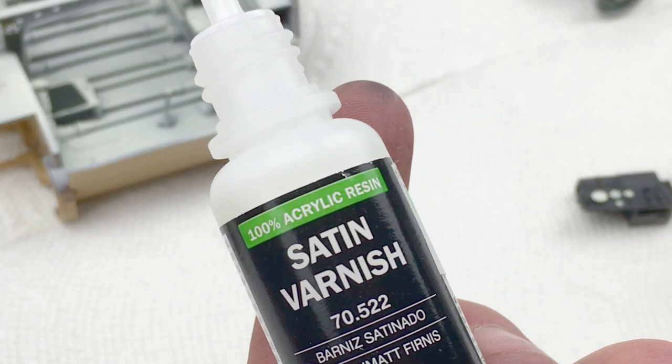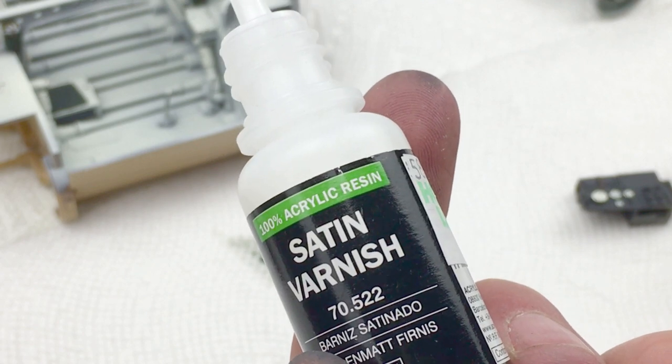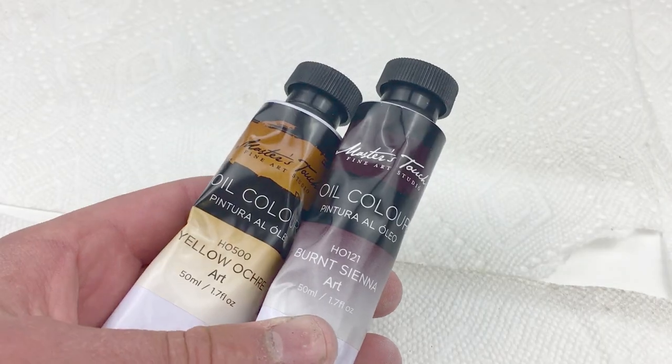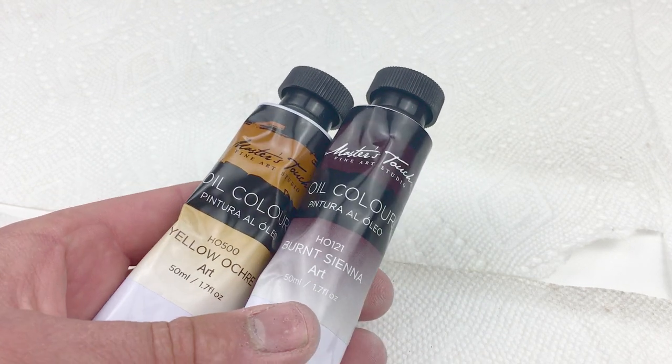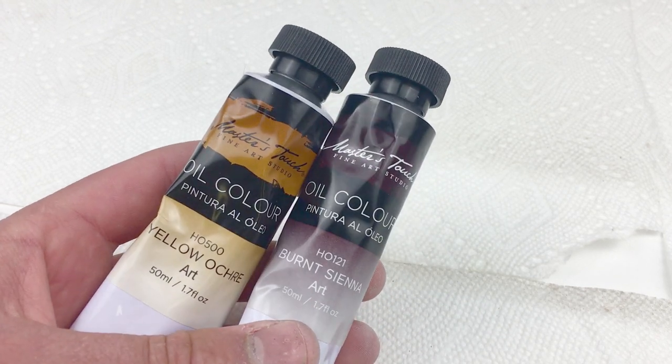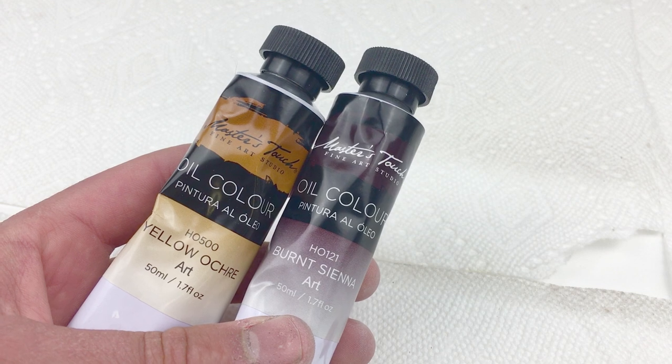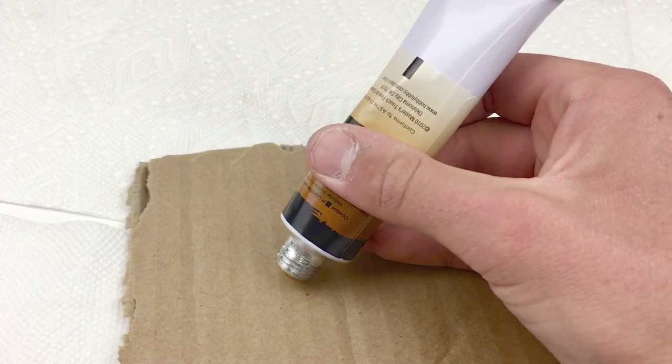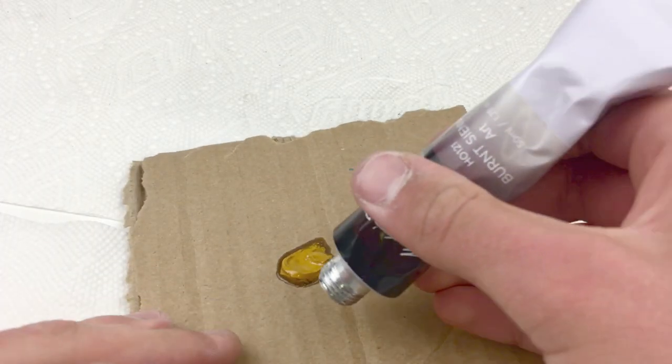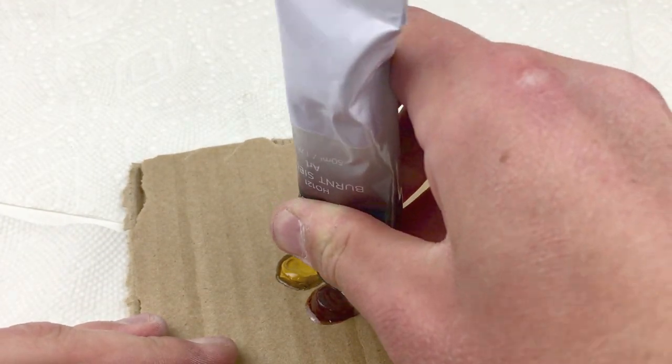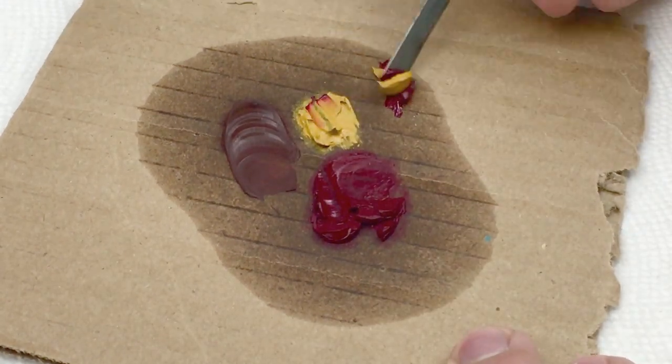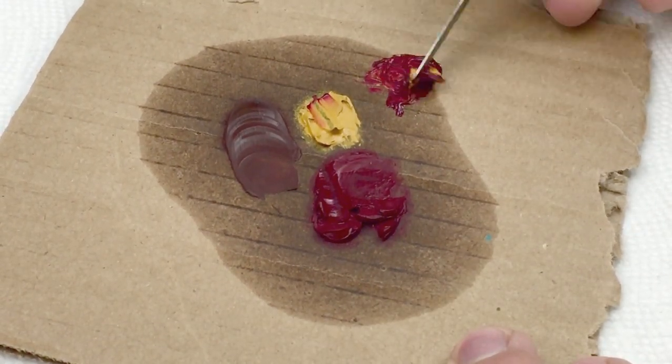Next, I'm going to protect the paint job with a coat of Vallejo Satin Varnish. After that, I'm going to start prepping these artist oils for weathering. Some people prefer abteilung or wilder weathering oils, but I find that these work great and are also far cheaper than dedicated weathering oils. I'm going to leave them on the cardboard overnight, which allows the linseed oil to soak out of them, making them dry faster and work better.